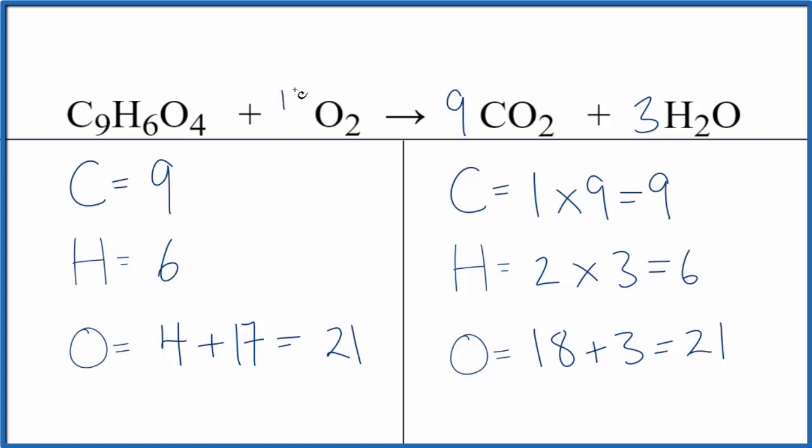And we can do that by putting a 17 over two because 17 over two times two, that's 17. Four plus 17 is 21.